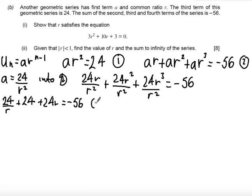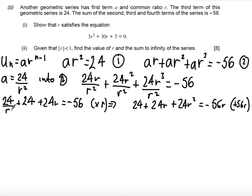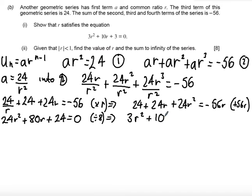And now I want to get rid of this r as a denominator, so I'm going to multiply the whole equation by r. So we get 24 plus 24r plus 24r squared equals minus 56r. So if I add the 56r to both sides, rearranging with the quadratic as the leading term, I get 24r squared plus 80r plus 24 equal to 0. And finally, I can divide through at this point by 8, which gives me 3r squared plus 10r plus 3 equal to 0.